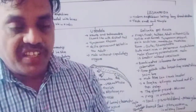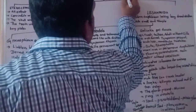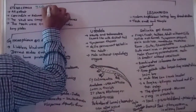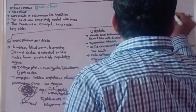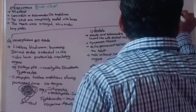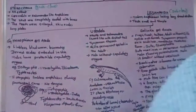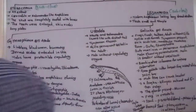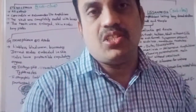Class Amphibia is divided into two subclasses. The first subclass is Stegocephalia and the second one is Lissamphibia. The Stegocephalia amphibians are all extinct — they have disappeared from Earth.